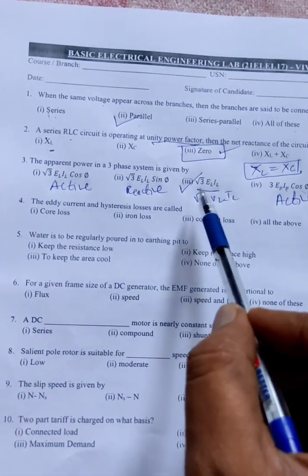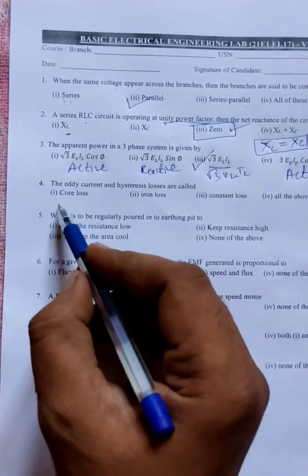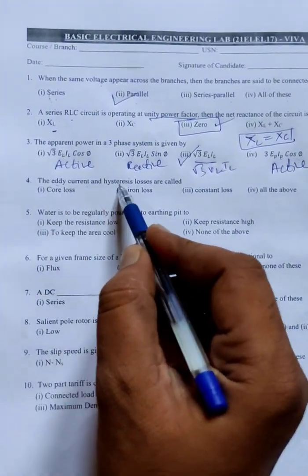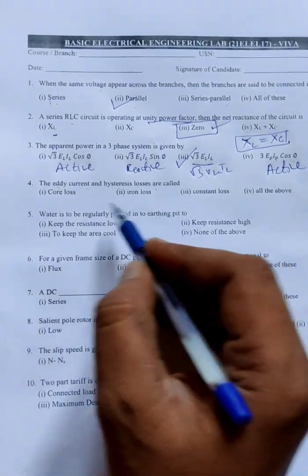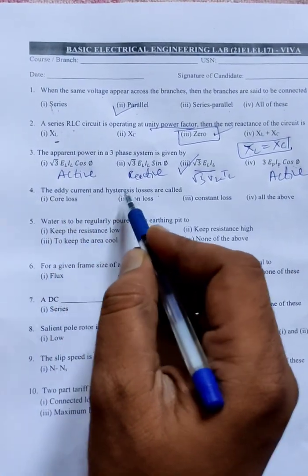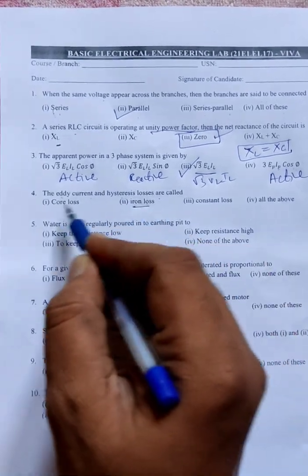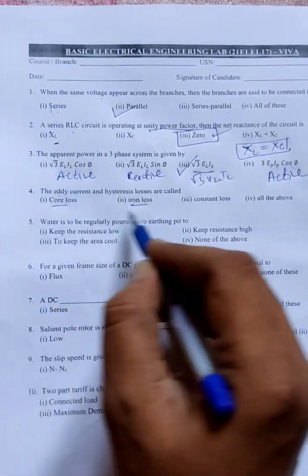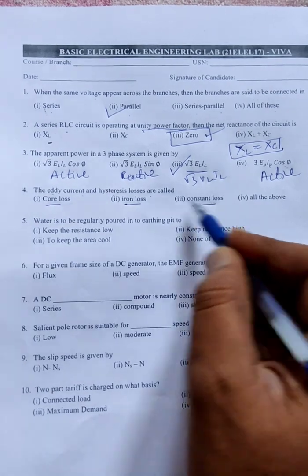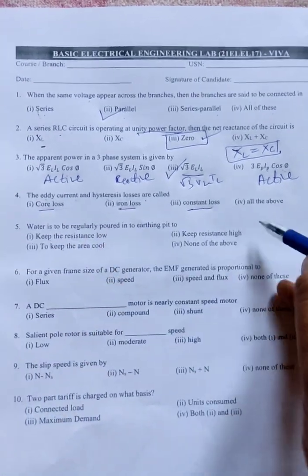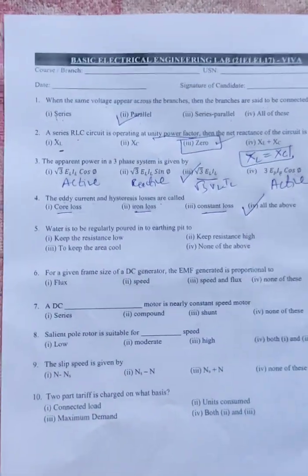Next, the eddy current and hysteresis losses are called - eddy current and hysteresis losses are types of iron losses. Iron losses is also called core loss. Core loss is also called constant loss. These two losses are constant, so the correct answer is all of the above.